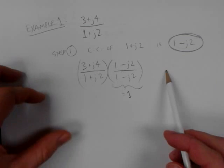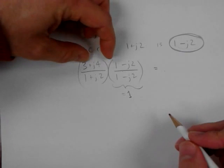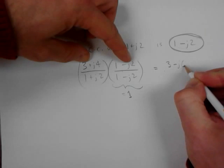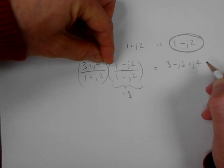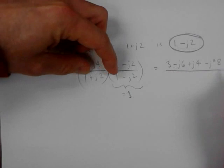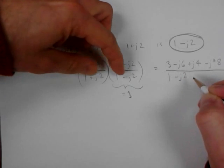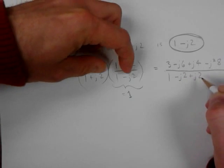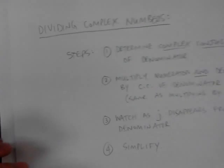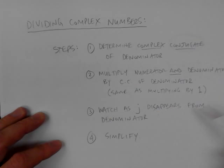So 3 times 1 is 3, then minus j6, plus j4, minus j squared times 8. The denominator: 1 times 1, minus j2 plus j2 — those two cancel — minus j squared times 4. That completes step two: multiply numerator and denominator. Step three: watch as j disappears from the denominator.